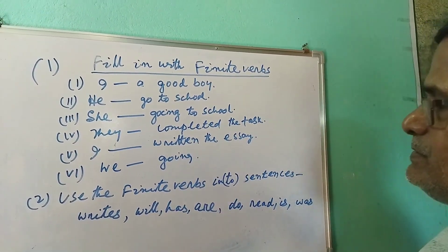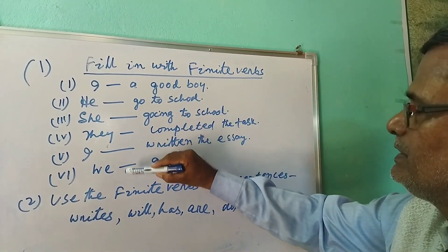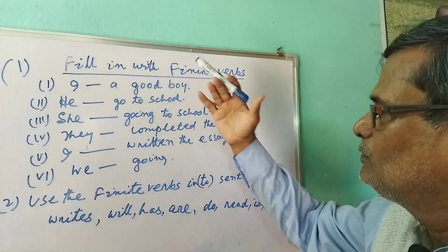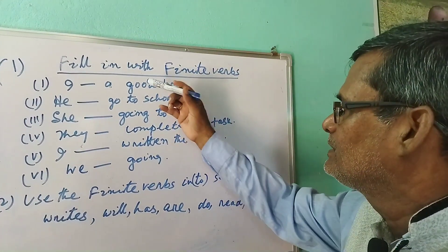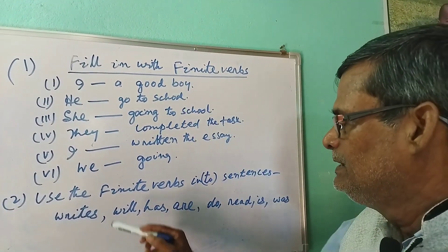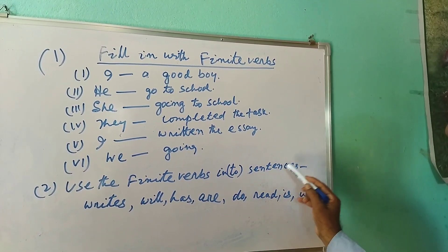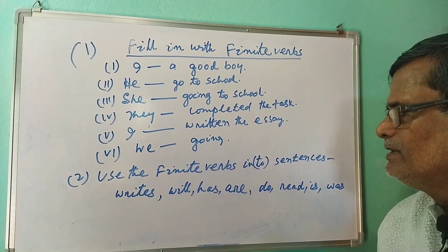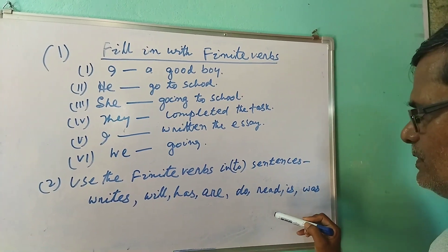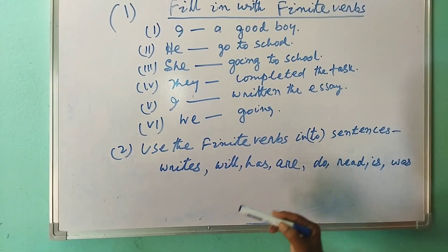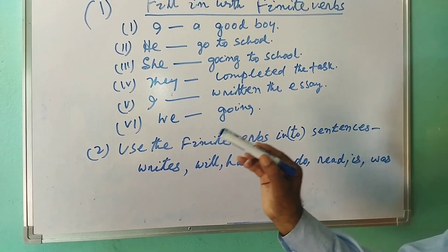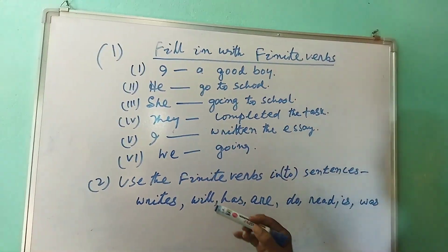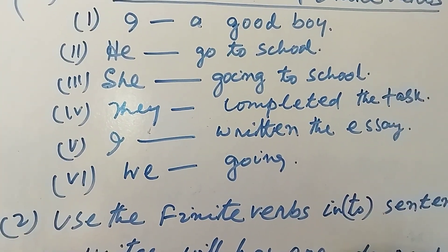The second type of question is not grammar-boring — it is about practicing with your own exercise. Use finite verbs in sentences. For example, with the verb 'writes': 'He writes a letter,' 'He writes an essay,' 'He writes a copy' — he writes whatever it may be. You can write many sentences using the given verbs.